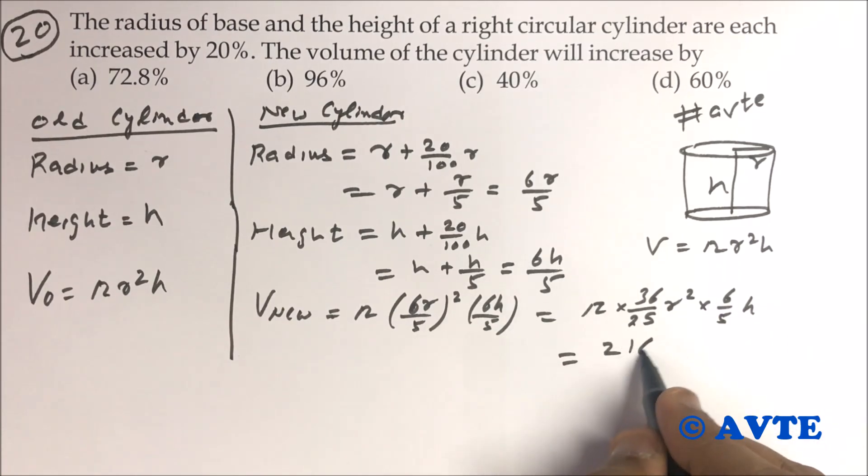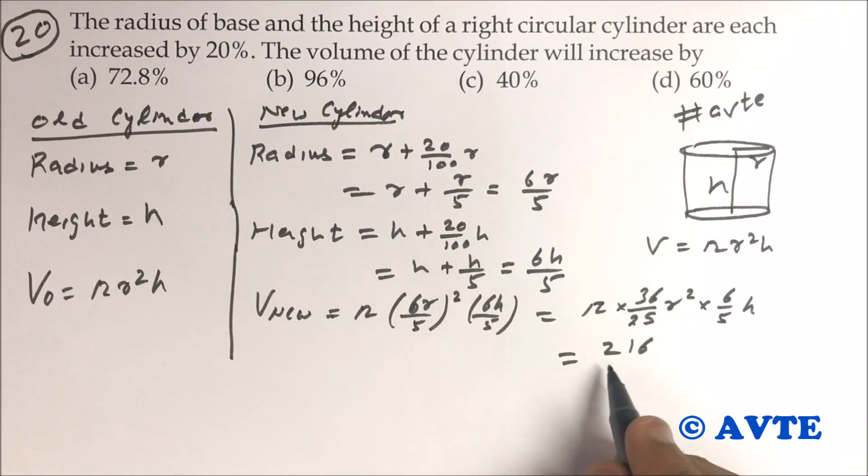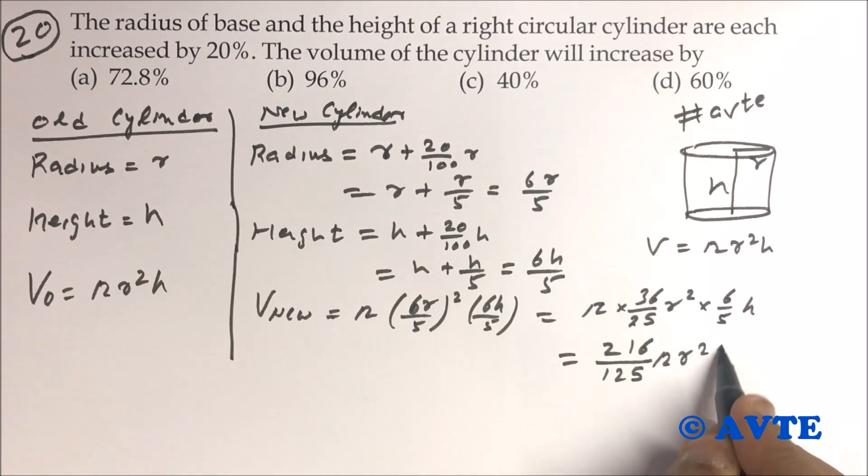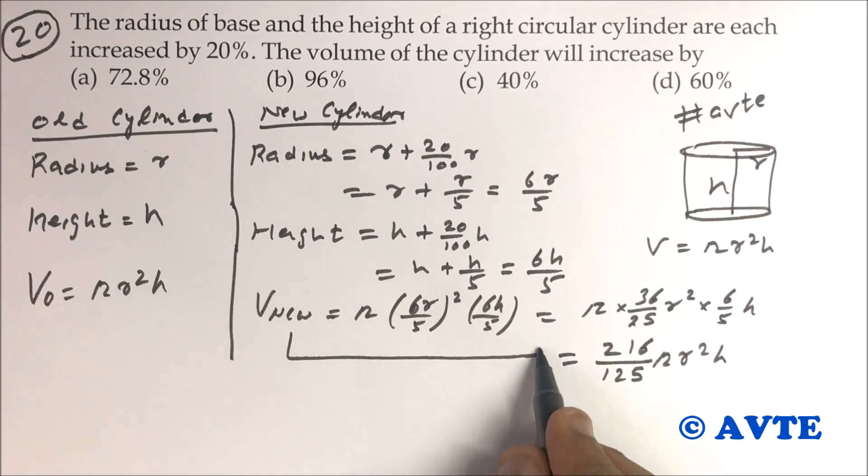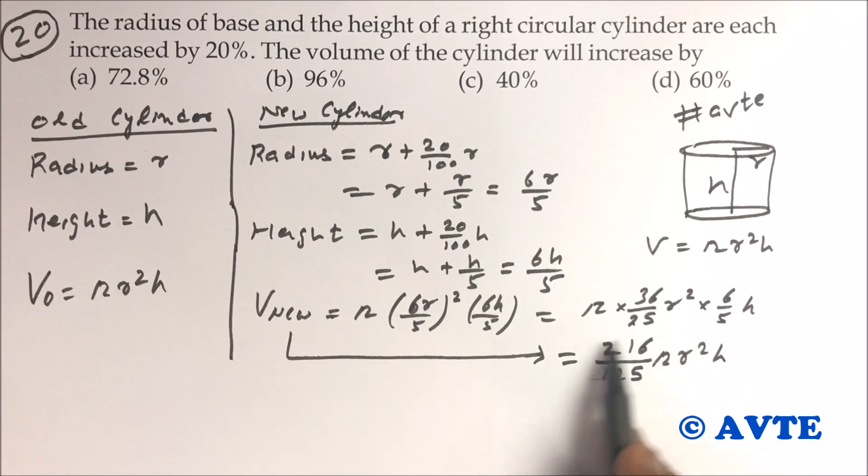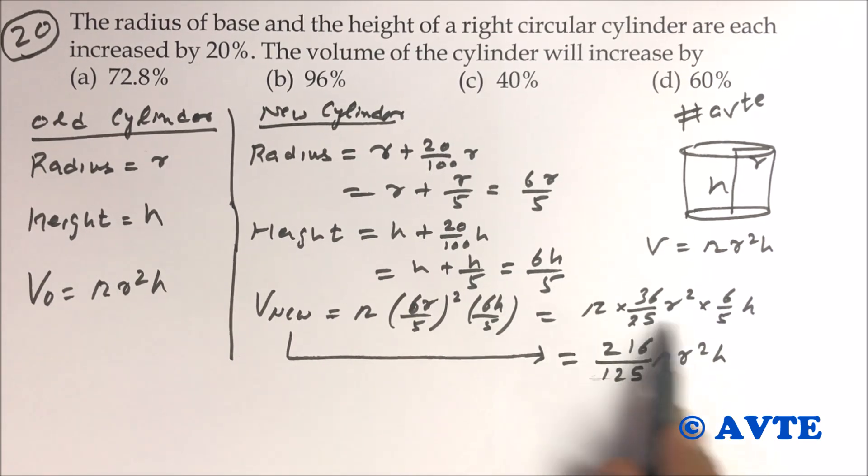That is pi into 36 by 25 r square into 6 by 5 h, which equals 216 upon 125 pi r square h. This is the volume of new cylinder.